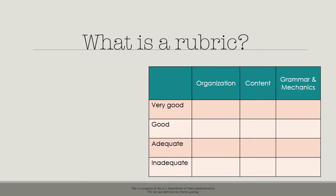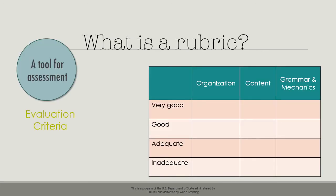A rubric specifies first what is being evaluated. These are the evaluation criteria. For example, when grading an essay, a teacher might choose to focus on the organization of the essay, the content, and the grammar and mechanics.